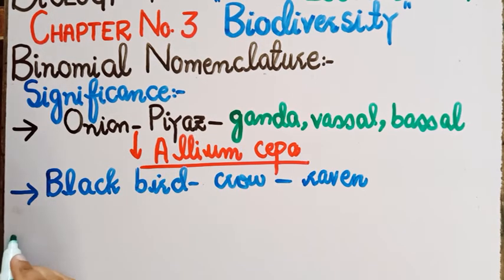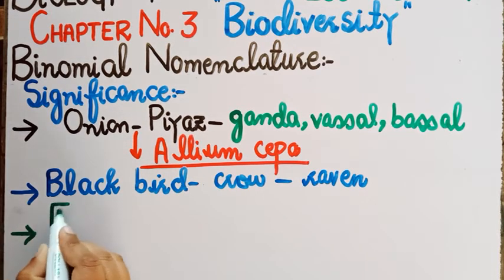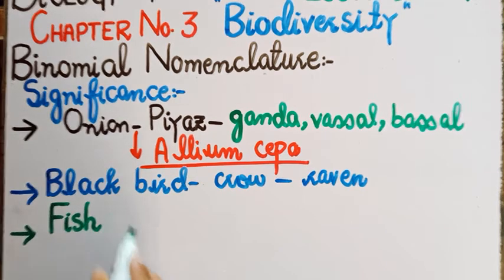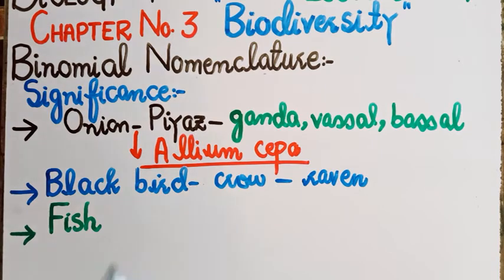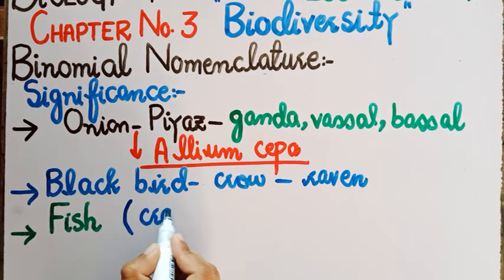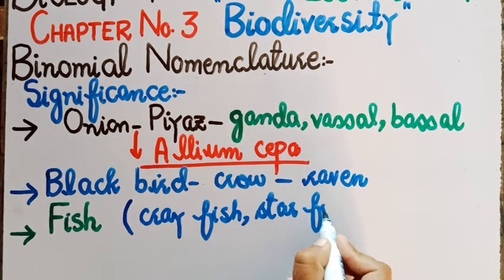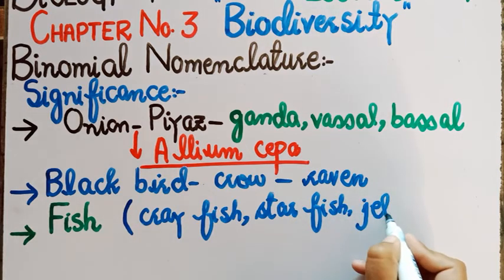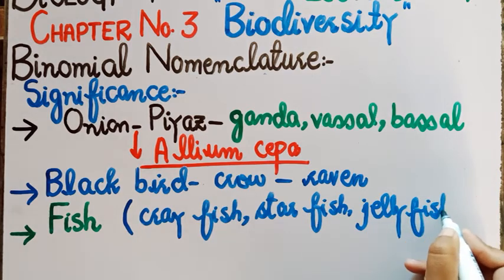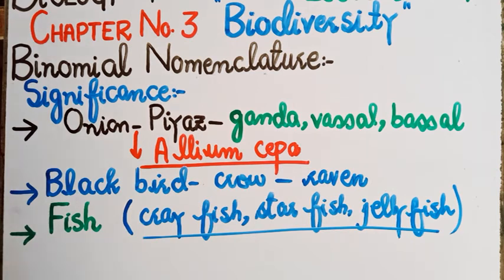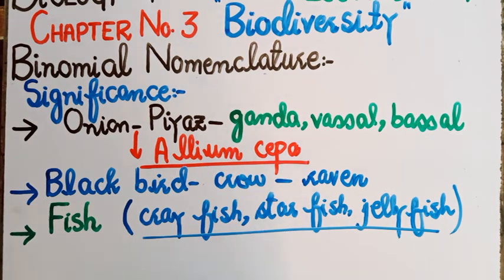تیسری reason یہ ہے کہ common names کی کوئی scientific basis یا scientific logic نہیں ہوتی۔ فار ایگزامپل fish — fish ایک vertebrate ہے، اس میں gills اور fins ہوتے ہیں۔ لیکن ہم کچھ organisms کو غلطی سے fish کا نام دے دیتے ہیں، جیسے crayfish، starfish، اور jellyfish — یہ سارے کے سارے invertebrates ہیں۔ Fish کی class تو vertebrates کو represent کرتی ہے، تو کوئی scientific logic نہیں بنتی کہ ان organisms کو fish کہا جائے۔ یہ تو ان کے common names ہیں اور common names کی کوئی scientific basis نہیں ہوتی۔